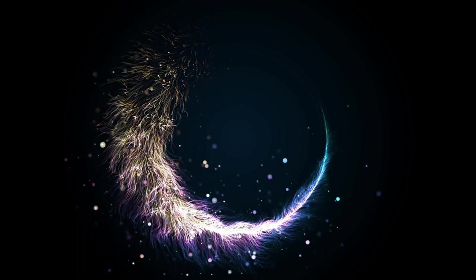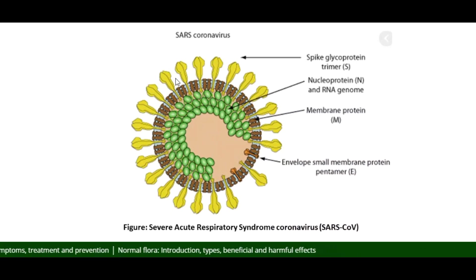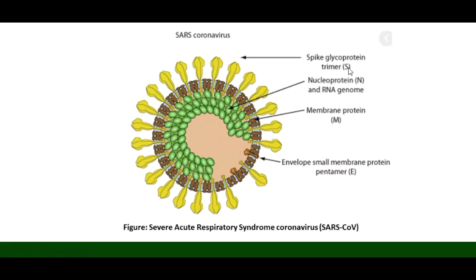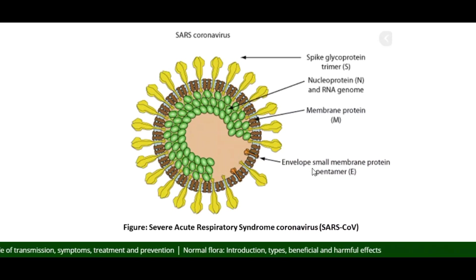Let's learn about coronavirus: introduction, mode of transmission, symptoms, lab diagnosis, treatment, and prevention. Here you can see the SARS-CoV structure. This part is the spike glycoprotein (S), this is the nucleoprotein (N) and RNA genome, this part is the membrane protein (M), and this one is the envelope, a small membrane protein pentamer (E).